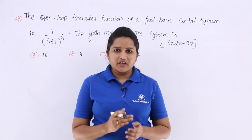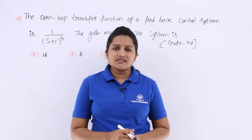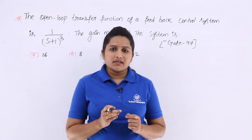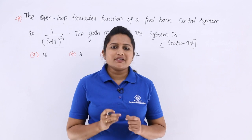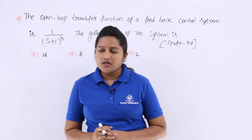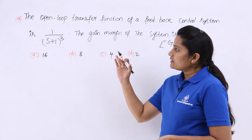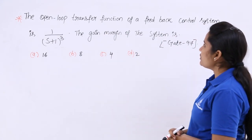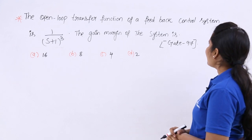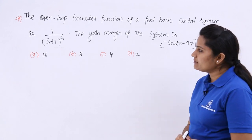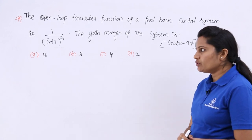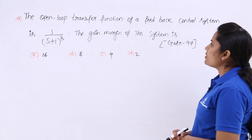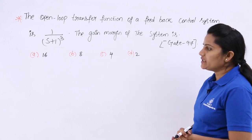In this video, we are going to discuss a previous GATE problem related to gain margin. You can observe the problem here. The open loop transfer function of a feedback control system is 1 by (s+1) whole cube. The gain margin of the system is...